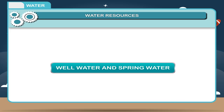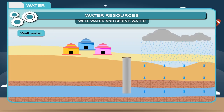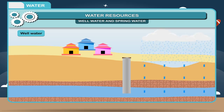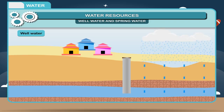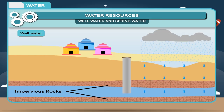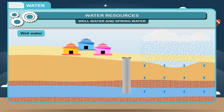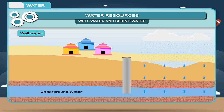Well water: Water comes to the earth's surface as rain. Most of it flows on the surface of the earth, while a small amount percolates down until it reaches the strata of land made of impervious rocks, where it either accumulates or starts flowing parallel to that layer. When we dig deep and reach the accumulated underground water, we call it a well.